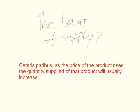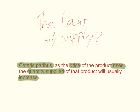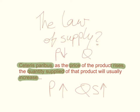Now the law of supply is very similar to the law of demand, which we introduced in one of the previous videos. The law of supply says, ceteris paribus — other things held constant — as the price of a product rises, the quantity supplied of that product will usually increase. When price falls, quantity supplied will usually decrease. This is the law of supply.